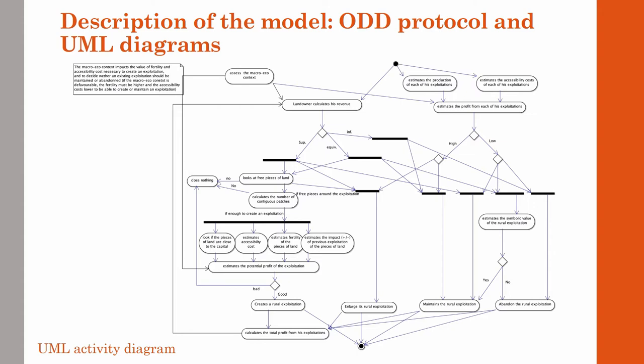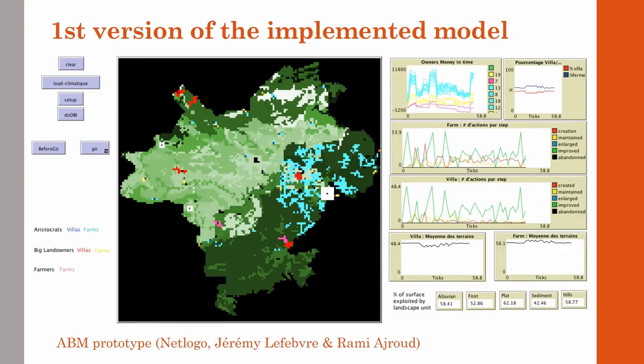Beyond their utility for communicating with computer scientists, these description tools turned out to be very useful for us in the conception of the model itself, as they obliged us to make explicit our hypotheses about the simulated system. The first version of the ABM was released only a month ago, so we won't discuss its results as the model still needs to be tested and improved.